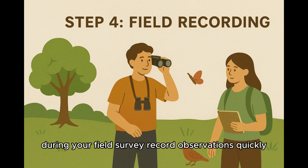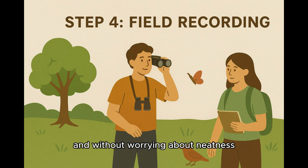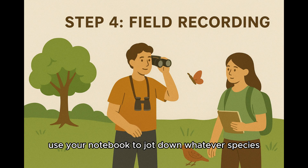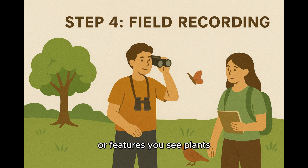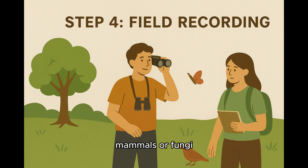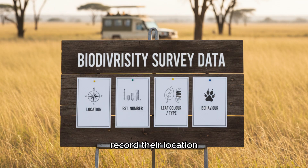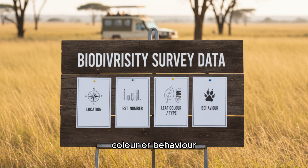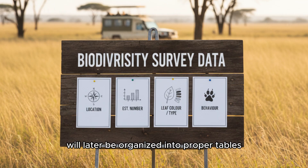Step 4: Field Recording. During your field survey, record observations quickly and without worrying about neatness. Use your notebook to jot down whatever species or features you see — plants, birds, insects, mammals, or fungi. Record their location, estimated number, and notable features such as leaf type, color, or behavior. These raw notes will later be organized into proper tables.